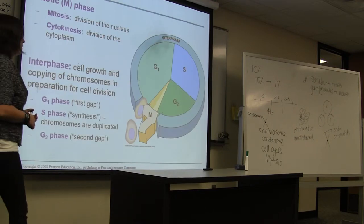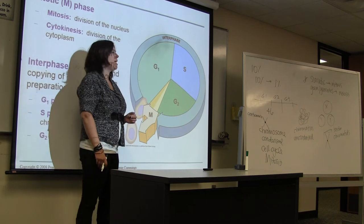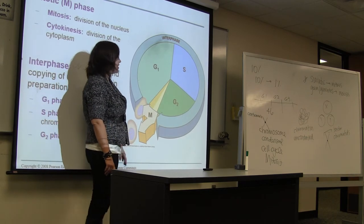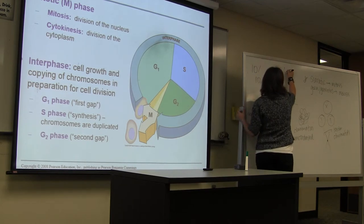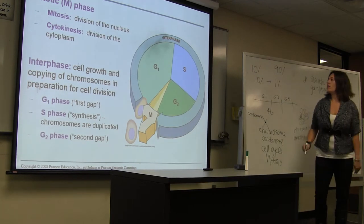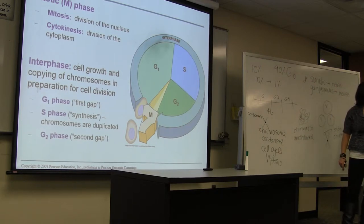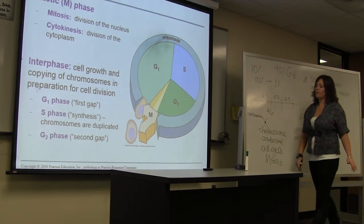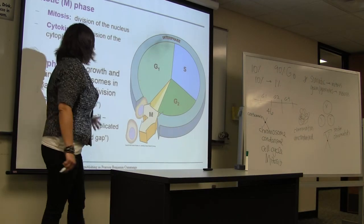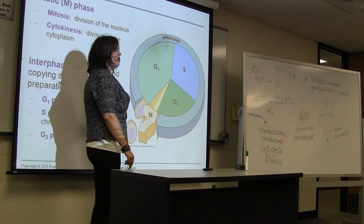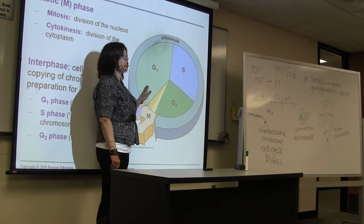Here's the actual cell cycle — it's made up of four different stages. When a cell is not in the cell cycle — remember we said 90% of the time a cell is not in the cell cycle — we call that the G0 phase. Whenever a cell is ready to enter the cell cycle, it will leave G0 phase and enter into G1.